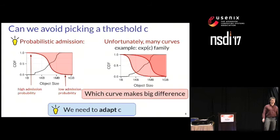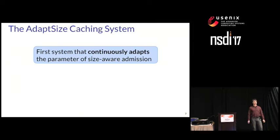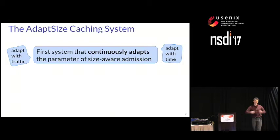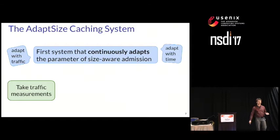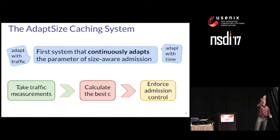This is where AdaptSize comes in. This is our caching system — one of the first focused on admission to the cache, and the first system that continuously adapts the parameter of size-aware admission. We adapt that parameter with the traffic over time to continuously optimize the hit ratio of the HAWC. There are three components: we measure and model the traffic to the server, feed that to a calculation that outputs the best C parameter, and then enforce that C parameter in our admission control component.